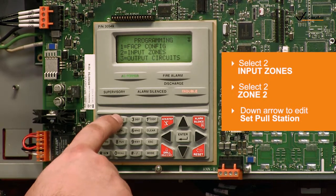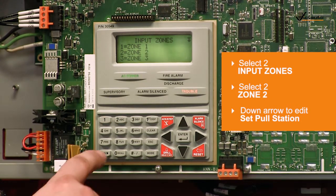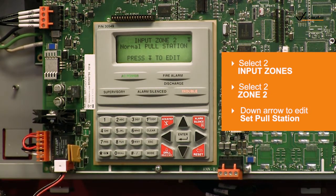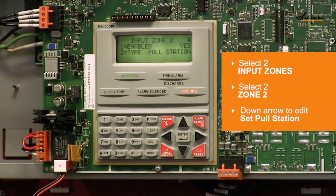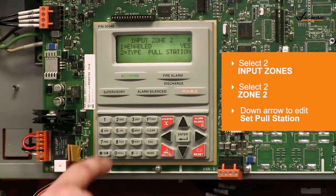To change your input zones, select 2 on the key panel. For this application, select 2 for zone 2. To change the pull station to a detector, use the down arrow key to edit. Select 2 for type pull station.